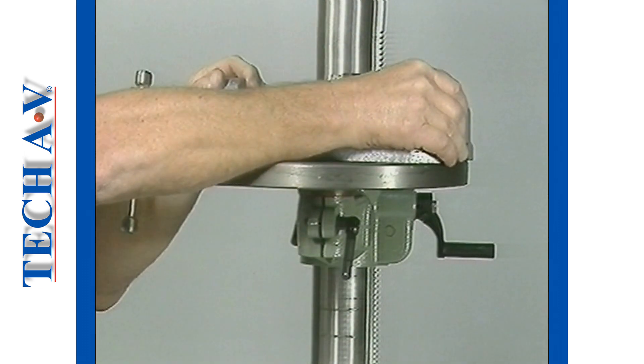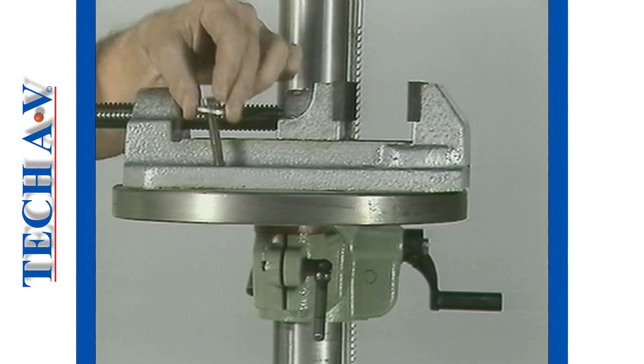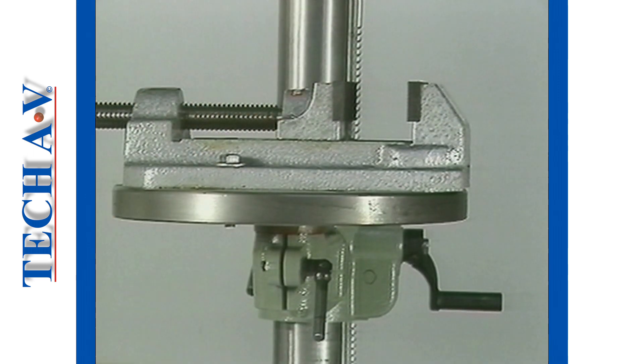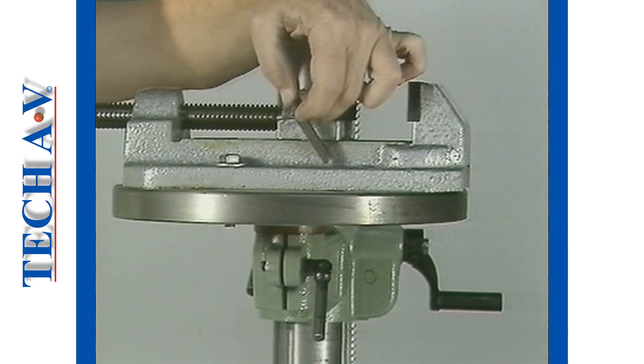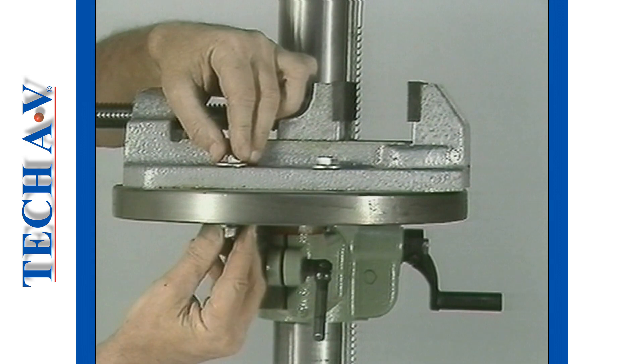A machine vise secures a regular-shaped workpiece. The vise is attached to the work table with suitable hold-down bolts. After the break, we shall demonstrate typical operating procedures for bench-mounted machines.